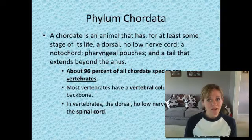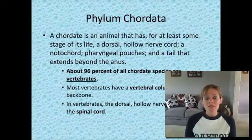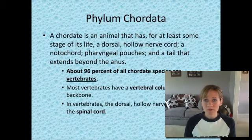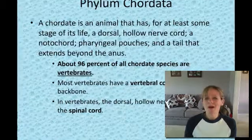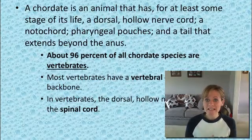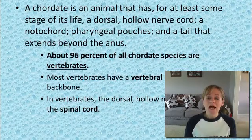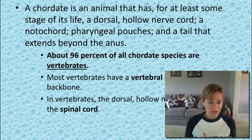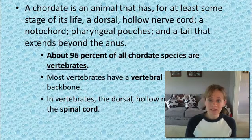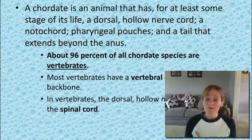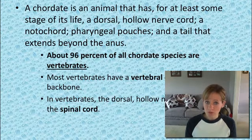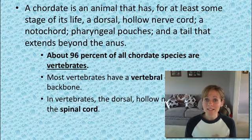To begin, very generally, we are looking at the phylum chordata. A chordate is any animal that has, at some point in its lifetime — maybe not its adult form, but definitely in its embryonic form — four things: a dorsal hollow nerve cord, a notochord, pharyngeal pouches, and a tail that extends beyond the anus, also known as a post-anal tail.